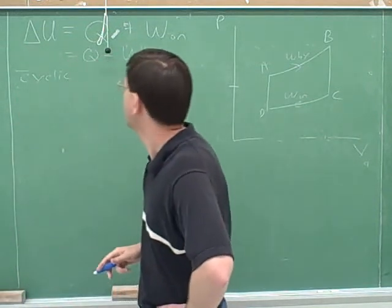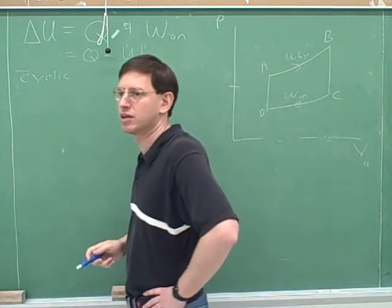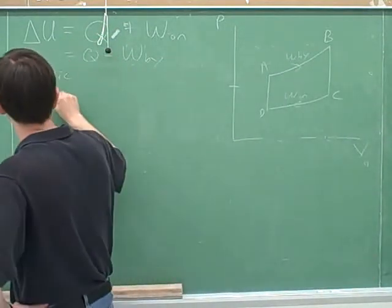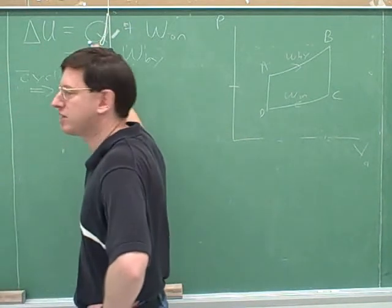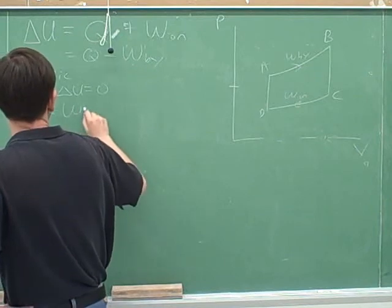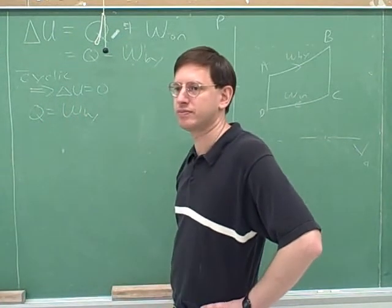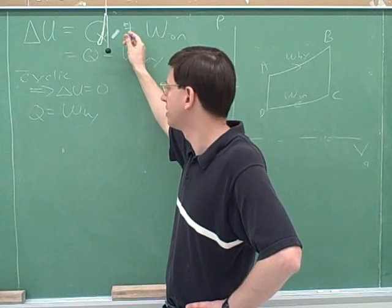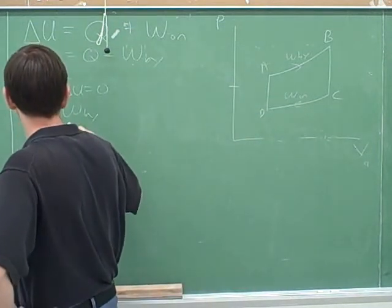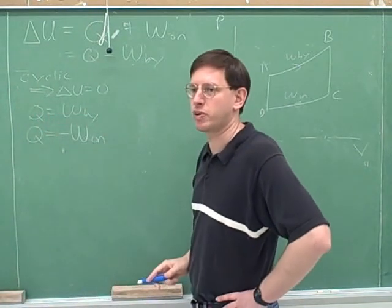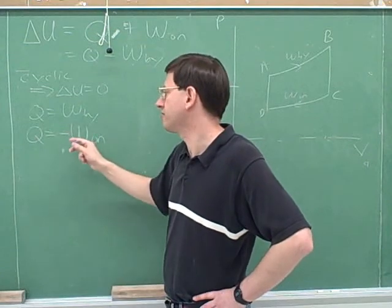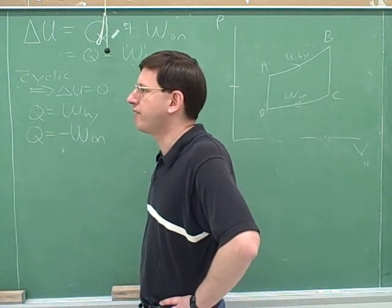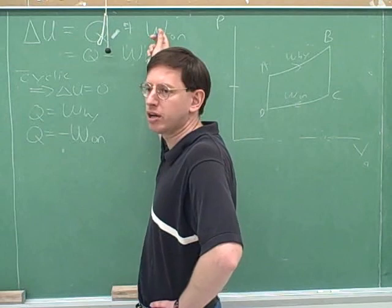When we have a cyclic process, that tells us directly that delta U equals zero. And then what happens to these equations? The easiest result is that the work done by the gas equals Q. But if work is being done on the gas, then Q equals the negative of the work done on the gas. For a cyclic process, Q equals W_by or Q equals negative W_on. Compare this with the constant volume process where W was zero and all we had left was delta U and Q — now delta U is zero and all we have left is Q and W.